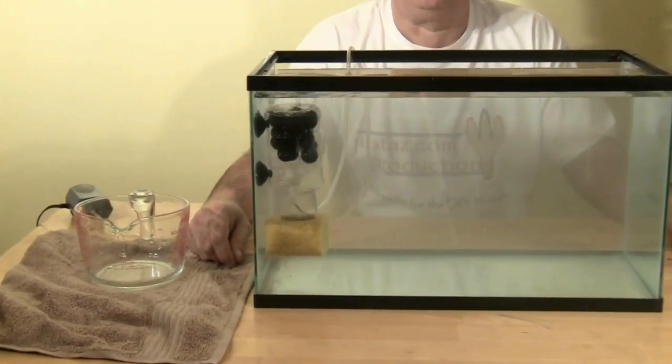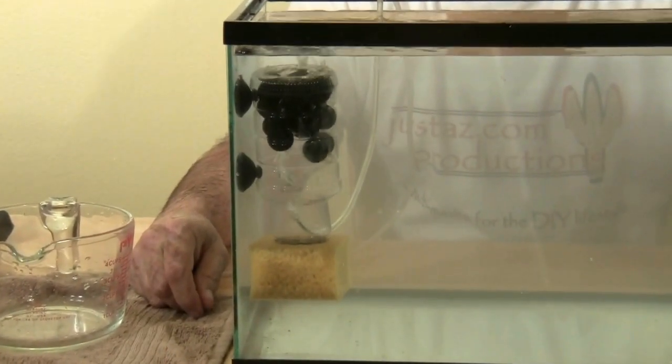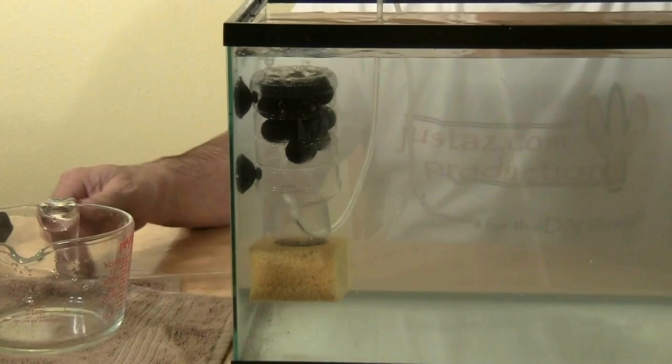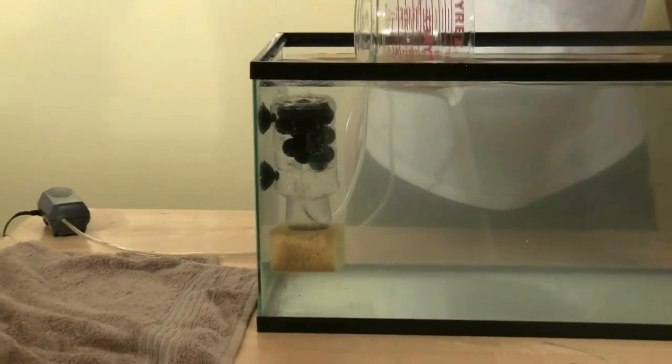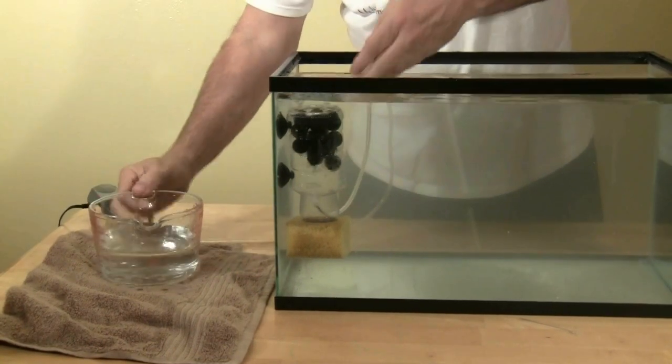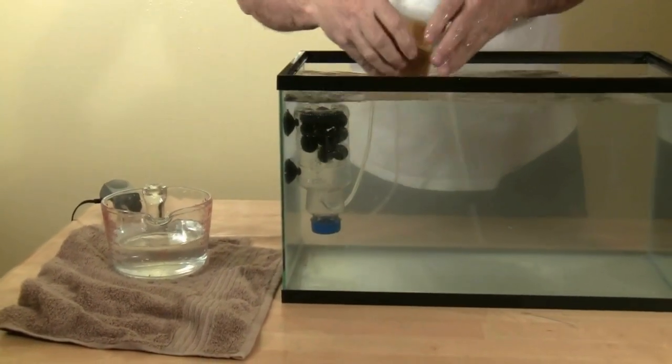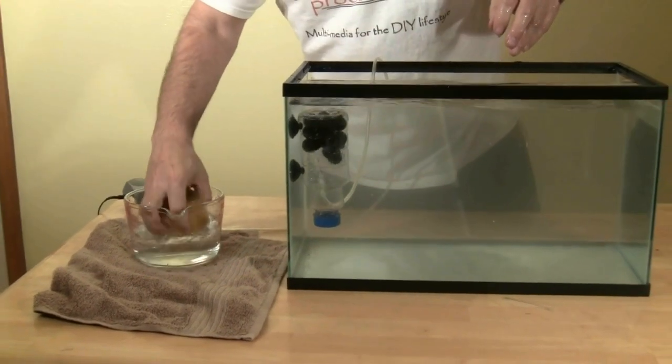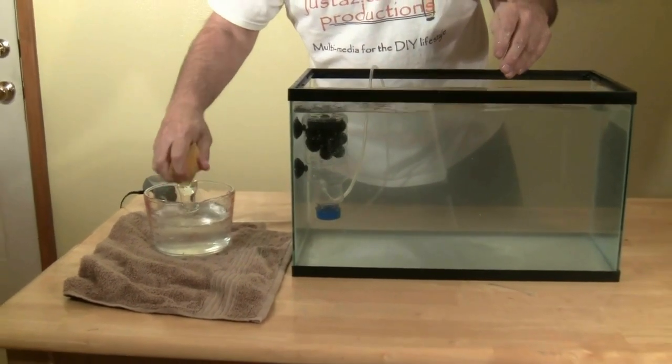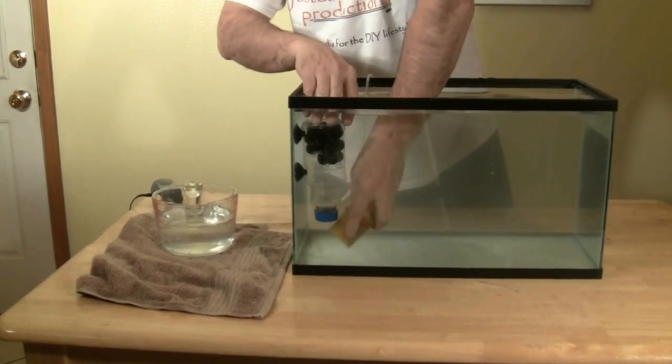You never need to remove the filter from the tank. The only maintenance required is the occasional cleaning of the sponge. To do this, you just take a little water from the tank, remove the sponge, and rinse it out in the tank water. And then replace it.